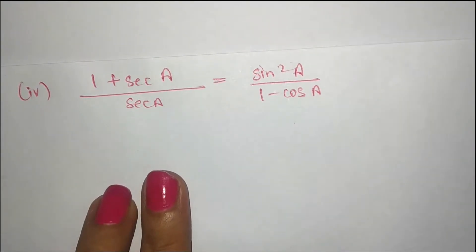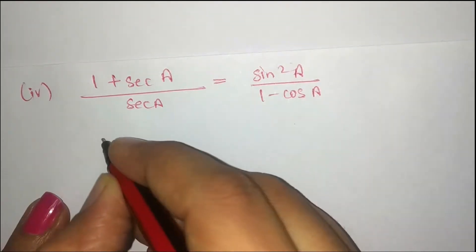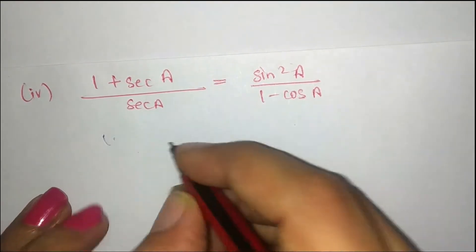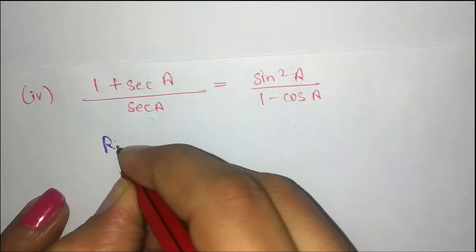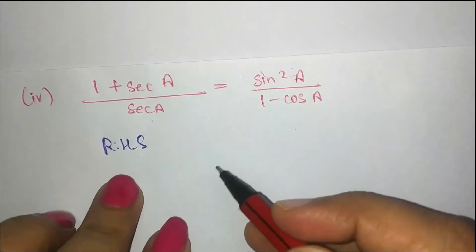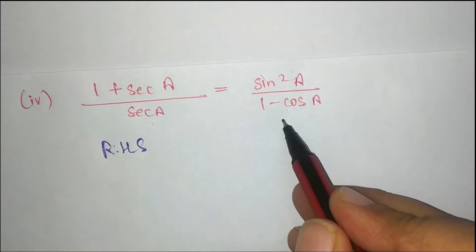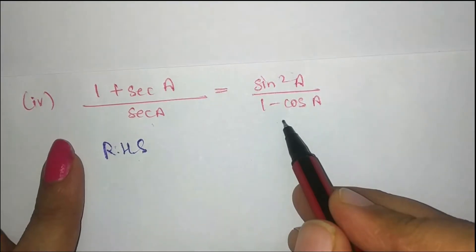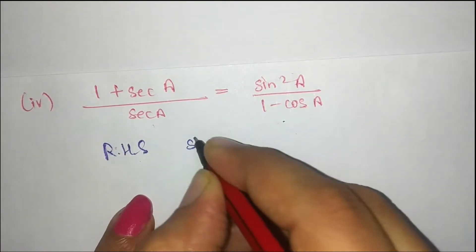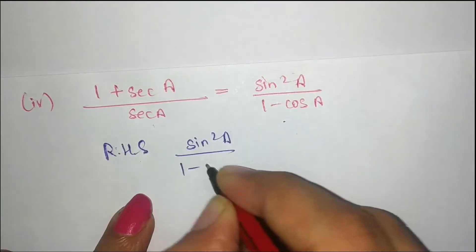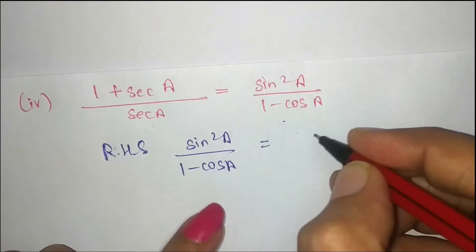Now question number five, fourth part. This is the left hand side and this is the right hand side. In this question it's better to take the right hand side first and then come to the left hand side. So the right hand side is sin²a upon 1 minus cos a.